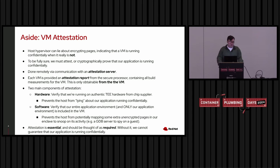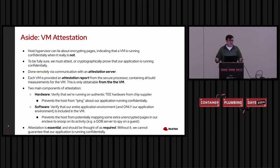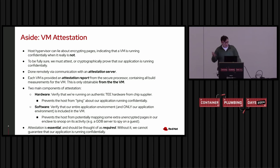Attestation is done via an attestation report from the secure processor. Each trusted execution environment architecture from any chip supplier provides an attestation report to prove you're running confidentially. We verify two things: first, that the hardware is actually confidential hardware — preventing the host from lying — and second, that our entire application environment, and only our application environment, is included in the VM. This prevents attacks where extra unencrypted pages are mapped, such as a GDB server spying on encrypted pages.